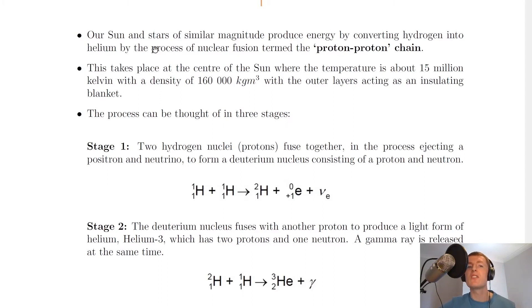Our sun and stars of similar magnitude produce energy by converting hydrogen into helium by the process of nuclear fusion termed the proton-proton chain. So this reaction is the one we're going to look at in more detail.